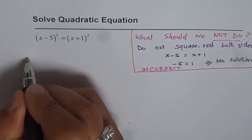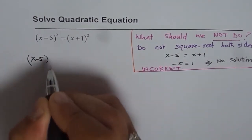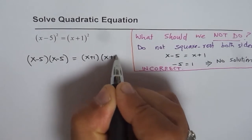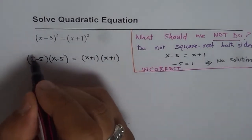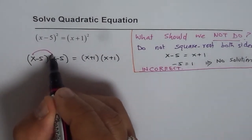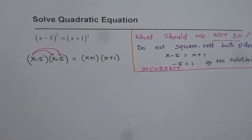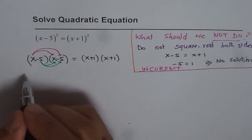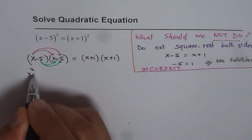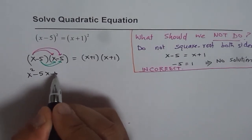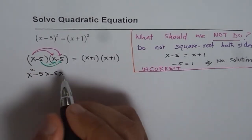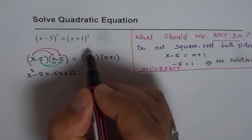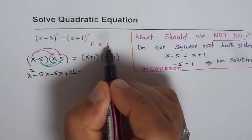x minus 5 whole square really means x minus 5 times x minus 5 equals x plus 1 whole square means x plus 1 times x plus 1. Now we can multiply with x first both these terms, and then we will multiply with minus 5 these terms. So we get four terms.